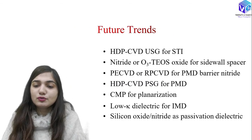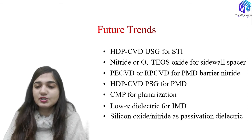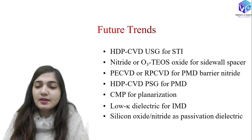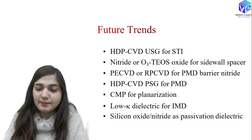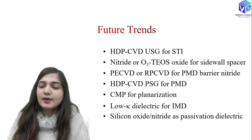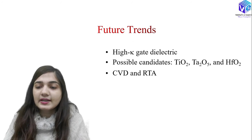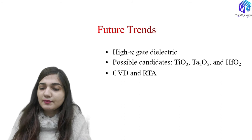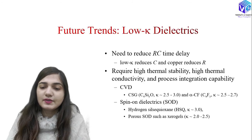Now coming to future trends. We are moving towards high density plasma CVD of undoped silicate glass for shallow trench isolation, nitride or ozone-TEOS oxide for sidewall spacers, PE-CVD or RP-CVD for PMD barrier nitride, high density plasma CVD PSG for PMD, CMP for planarization, and low dielectric constant material for IMD. We will also use silicon oxide or nitride as passivation dielectric, high dielectric constant gate dielectric with possible candidates TiO2, Ta2O5, and HfO2, followed by rapid thermal annealing after CVD.